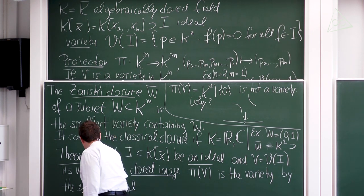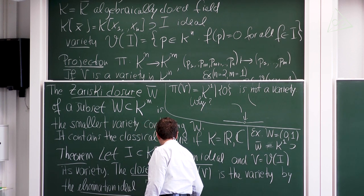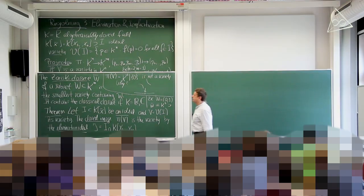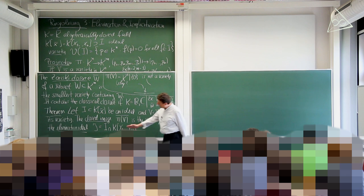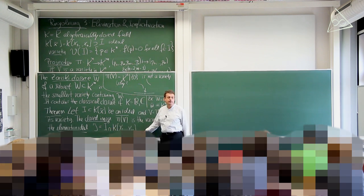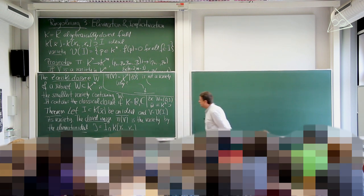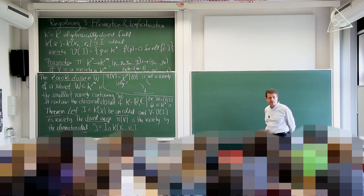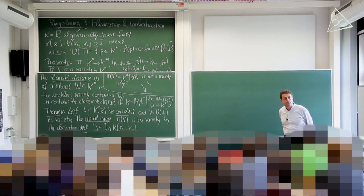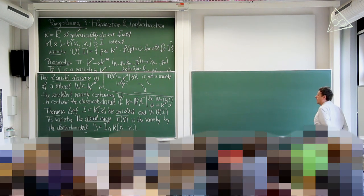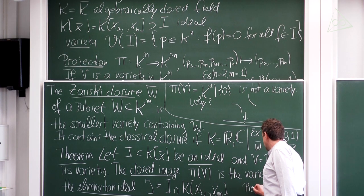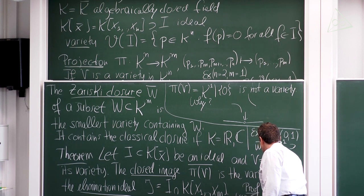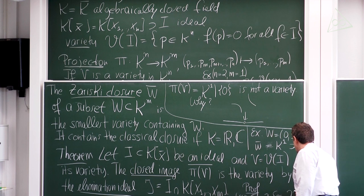The elimination ideal j, as a definition, is I intersected with the subalgebra generated by the first m variables. If I is an ideal in the big polynomial ring, the intersection with the subring is also an ideal, and its variety in m-dimensional space is the smallest variety containing π(V). The proof is referred to Cox–Little–O'Shea, theorem 3 in section 2.2.